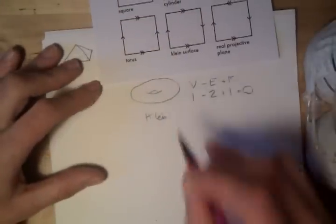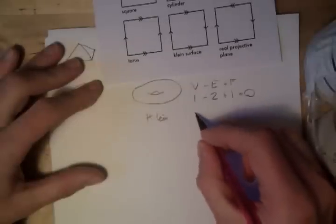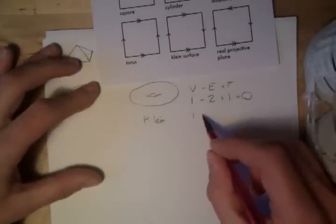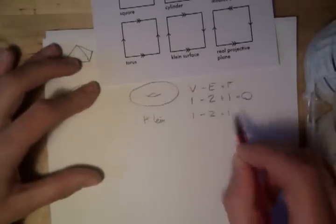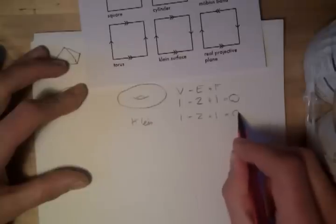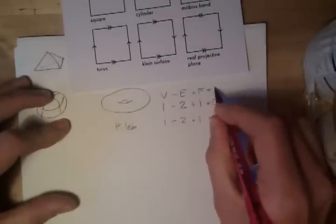So, for Klein bottle, we have one vertex, and again, two edges and one face. So, again, V minus E plus F is zero. And by the way, we normally call this number the Euler characteristic, of the Klein bottle.